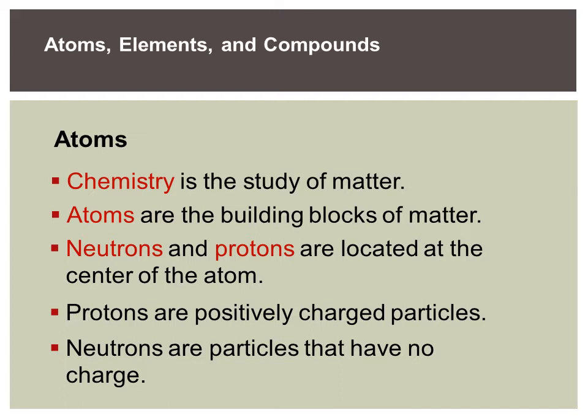Protons — think 'pro,' think positive. Protons have a positive charge. These two items, the neutrons and the protons, are located in the nucleus of an atom. What do we know about magnets? If I take a positive side of a magnet and another positive side and try to bring them together, they want to repel one another. So if I have all these positive protons in a nucleus, they'll want to repel each other. The neutrons create a buffer and help hold the protons together.